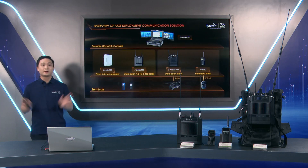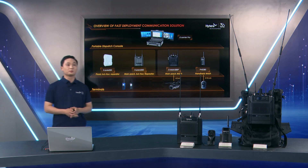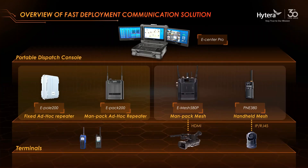Here is the overview of our fast deployment communication solution. It is divided into two parts. The left part is the narrowband solution, mainly for voice transmission. The right part is the broadband solution, not only for voice but also for video transmission. The narrowband solution includes eCenter Pro, ad-hoc repeater, and radios.